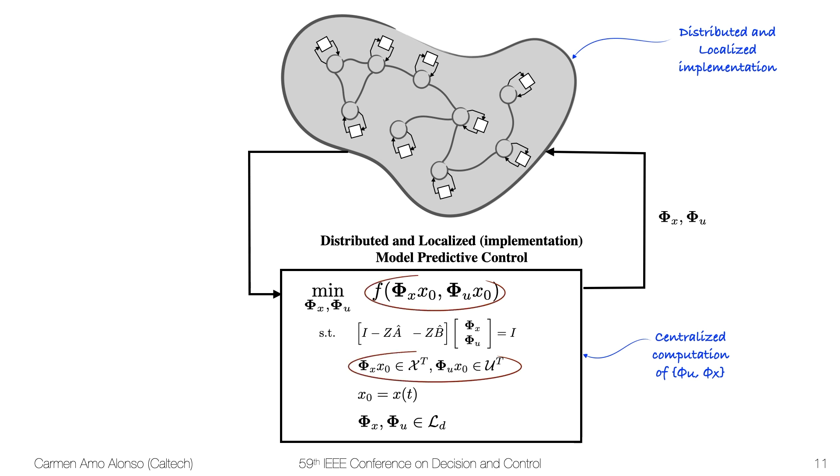But we still have a centralized synthesis of phi_x and phi_u because it is not immediate how to distribute the terms highlighted in red. But I just want to point out that just by using SLS, we've achieved a distributed and localized implementation and a closed loop formulation. Here is where most of the other approaches that rely on a parameterization for MPC would stop because their optimizations are not amenable for distribution.